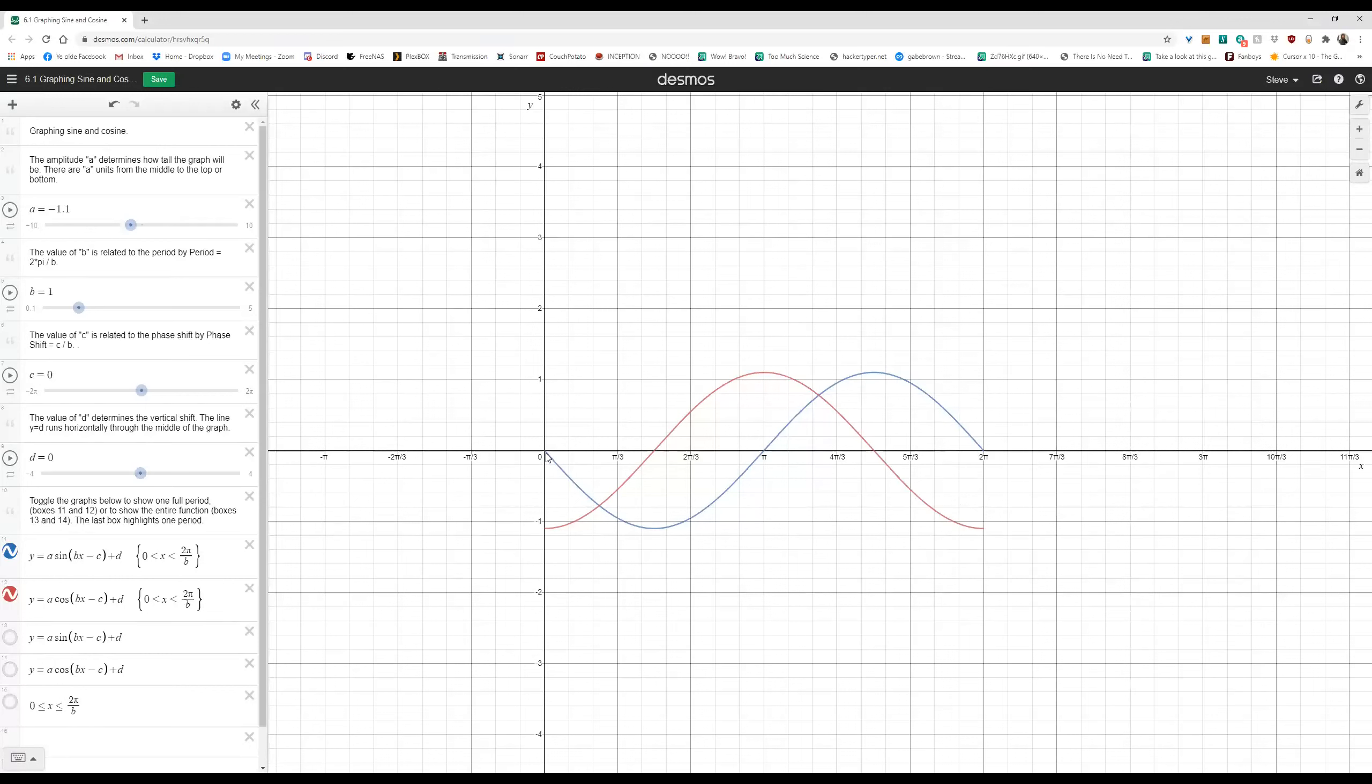Sine normally would start at 0 and move up, but in this case, sine starts at 0 and moves down after it's become negative. And I can also increase that value of a to be a large negative number and see that it would continue stretching it out as well.